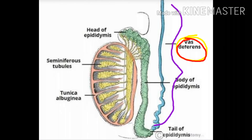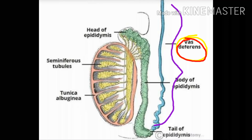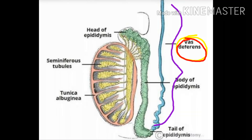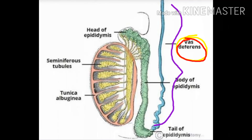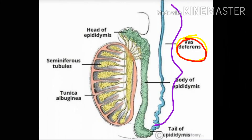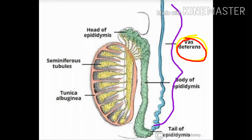Now let's come to the sperm duct, also called vas deferens. It travels upward into the abdomen, passing through the inguinal canal. The inguinal canal is the canal through which the testes descends into the scrotum during birth. There are times when the pressure in the abdomen increases and it leads to the bulging of the intestine into the scrotum — this problem is called hernia. The function of the sperm duct is to connect with the ureter and join at the urethra at the back of the urinary bladder, looping around the ureter.